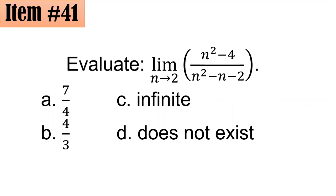Number 41. Evaluate the limit of n squared minus 4 all over n squared minus n minus 2 as n approaches 2.